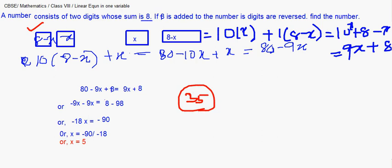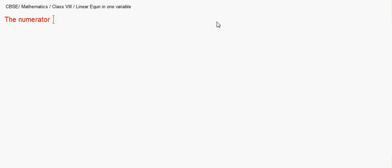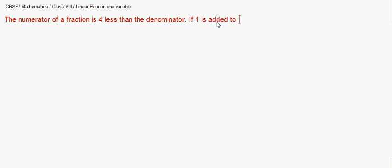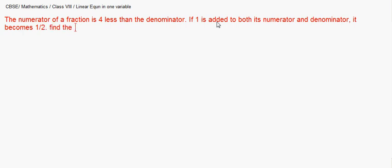Moving on to another question. The numerator of a fraction is 4 less than the denominator. If 1 is added to both its numerator and denominator, the fraction becomes 1 by 2. We have to find the fraction.